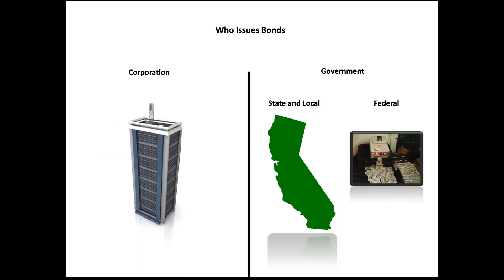So who issues bonds? There are really just two divisions: corporations and government. The model I just walked you through was a corporation. If a corporation needs to raise money, one of their options is to go to a bank and have the bank issue bonds.